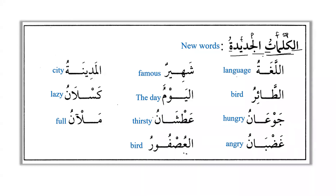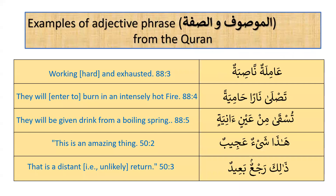Now let's look at examples of adjective phrases — al-masuf wa al-sifah — from the Quran. From Surat al-Ghashiyah: 'Hal ataka hadith al-Ghashiyah?' — 'Wujuhun yawma'idhin khashi'ah' — then the sifah used for the faces — 'amilatun nasibatun' — working hard and exhausted. We can see that amilatun and nasibatun both end with ta' marbuta, so both are feminine, both are singular, both are nakira, and both are marfu'.